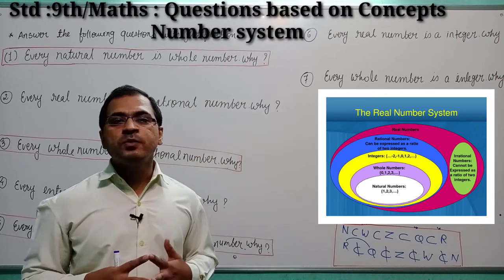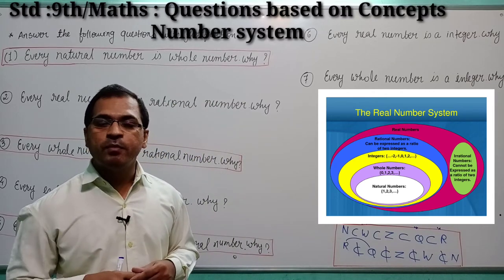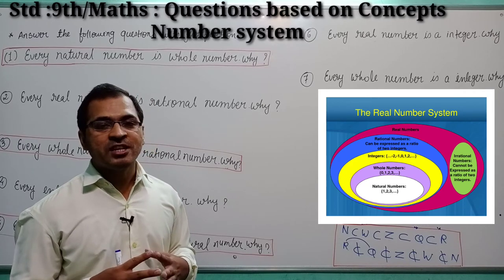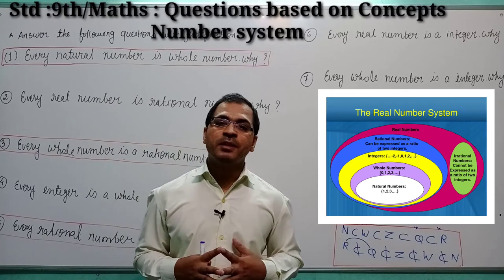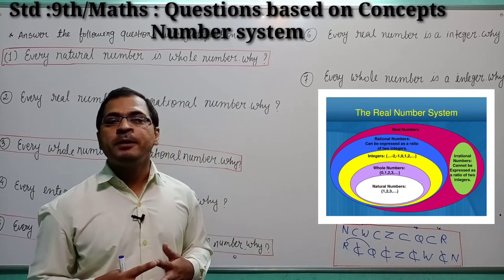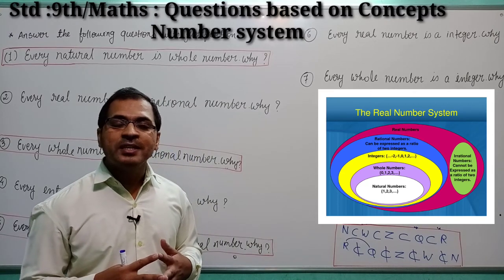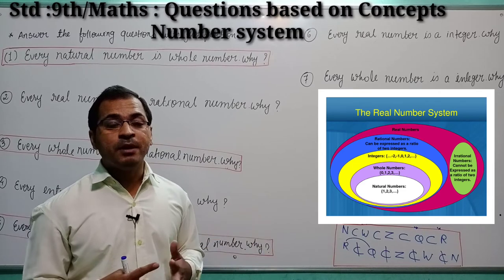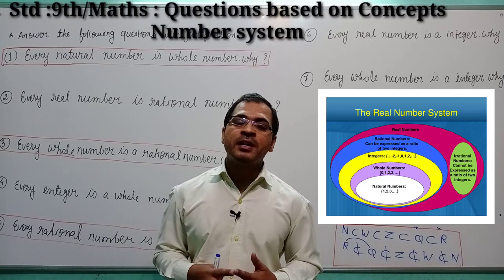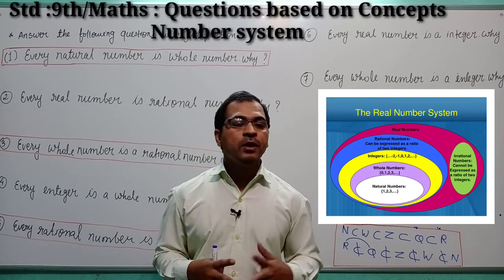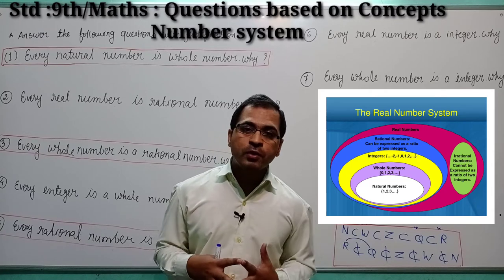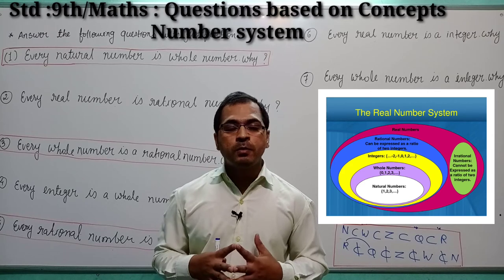Rational numbers: the numbers which can be written in p/q form are known as rational numbers. Irrational numbers: the numbers which are not rational — meaning the numbers which can't be written in p/q form — are known as irrational numbers. And finally, real numbers: the collection of rational and irrational numbers are known as real numbers. On the basis of this concept, we will practice a few more questions to make our concepts very clear.